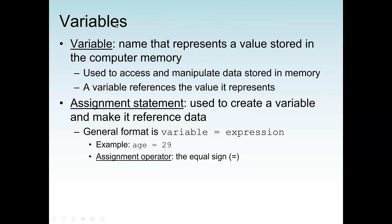Variables are very important — we need them to store data. A variable is a memory location. When we declare a variable, the operating system randomly allocates memory space. A variable is a name that represents a value stored in computer memory, and it's used to access and manipulate data stored in memory.